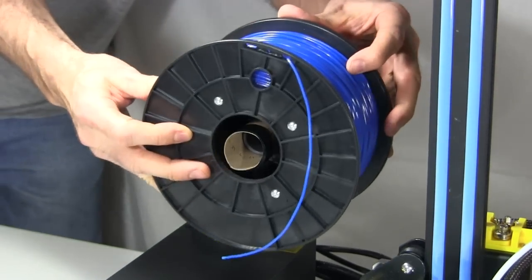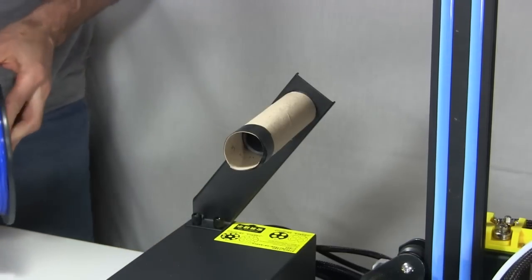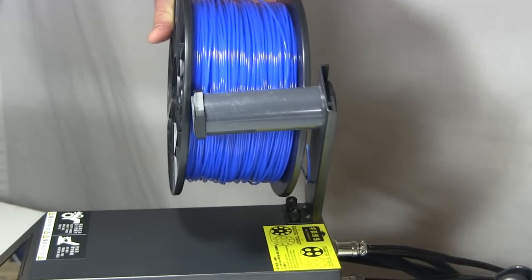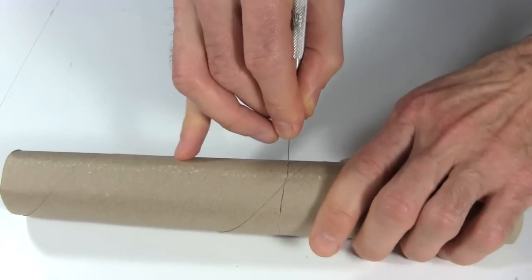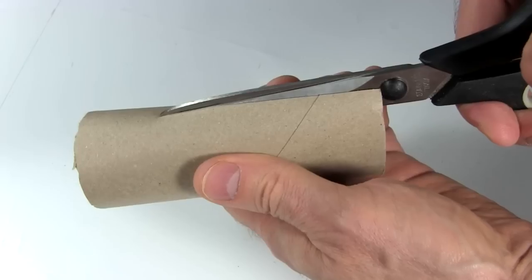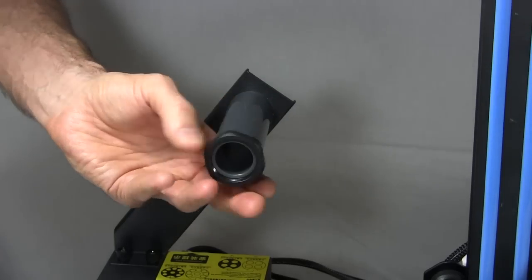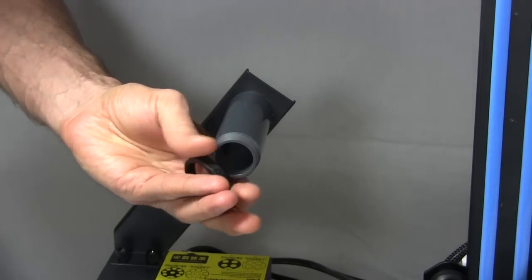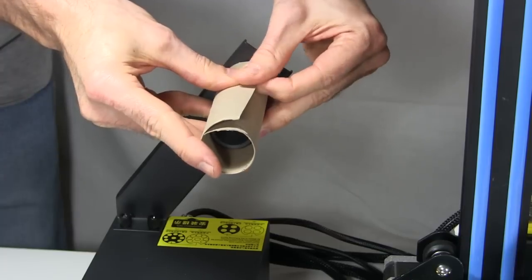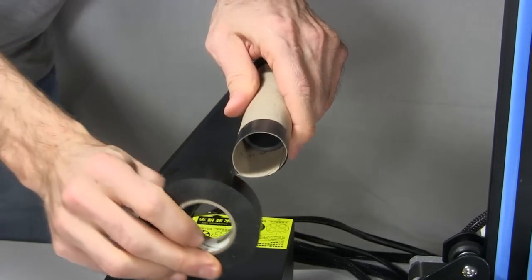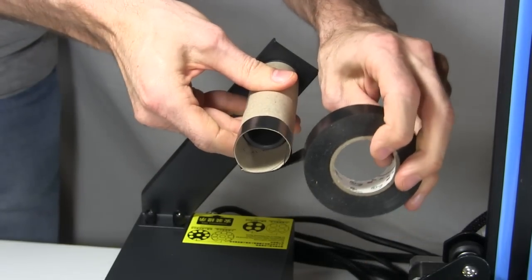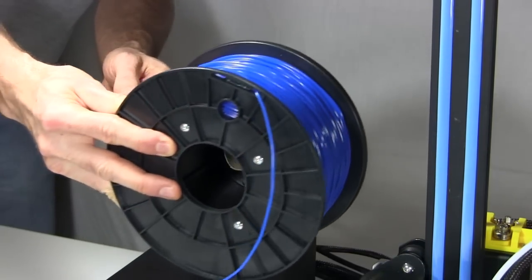The second modification is this cardboard tube for holding the filament spool. The original one wasn't long enough for the spool I'd bought. A very simple solution was to cut a cardboard tube from a paper towel roll in half, and then again lengthwise. I then removed one of the nuts from the original tube and wrapped the cardboard tube snugly and evenly around it and taped it in place. I also wrapped a few layers of tape on the end to keep the filament spool from sliding off. This solution couldn't have been simpler.